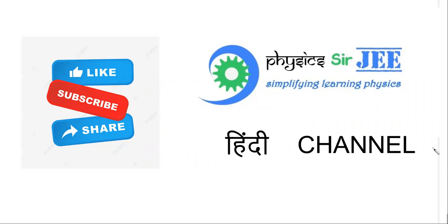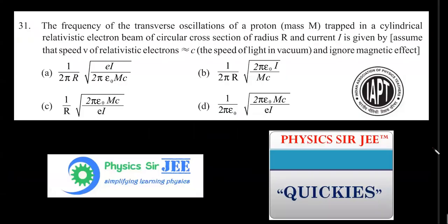Let me present you the question. The frequency of transverse oscillations of a proton of mass M trapped in a cylindrical relativistic electron beam of cross section of radius R and current I is given by - assume the speed of these electrons is c, which is same as speed of light in vacuum, and very importantly, he's asking us to ignore magnetic effect. A lot of students got confused because of this word relativity and thought this was slightly out of their JEE Advanced syllabus or the NCERT textbook.